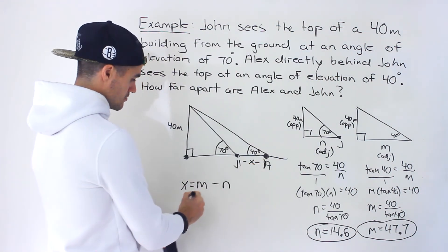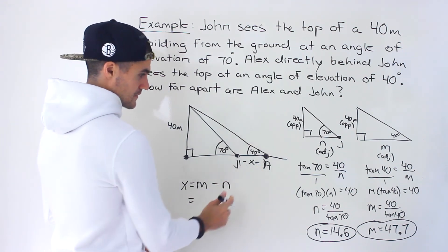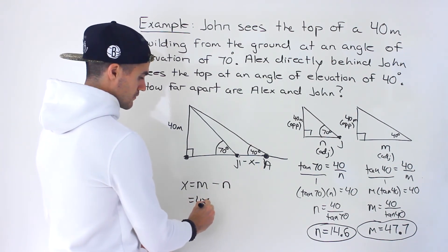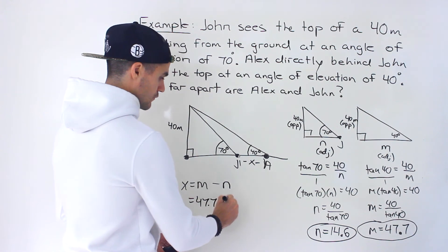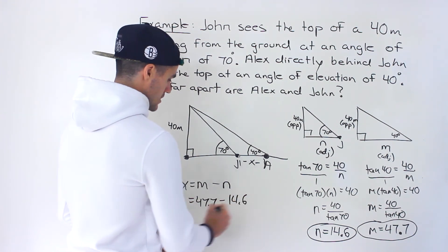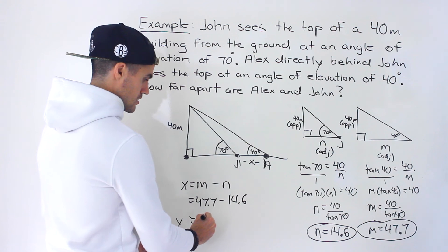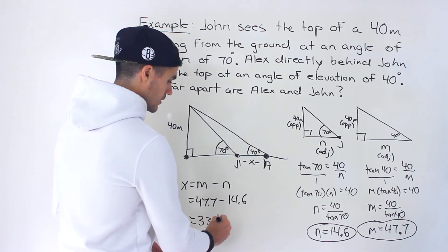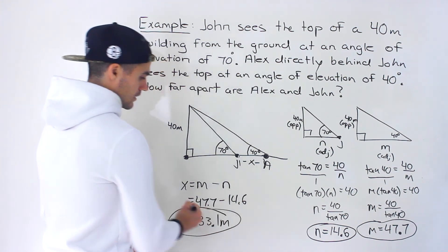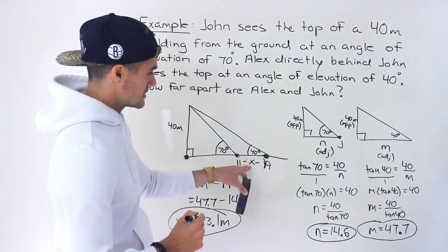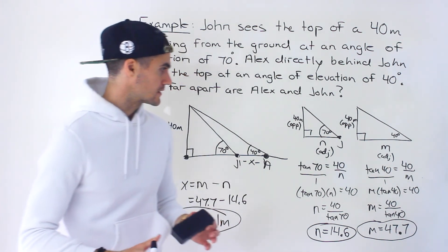So then taking those values, putting it in here to find this X value, it would be 47.7 meters minus 14.6 meters. And that would give us 33.1 meters like that. So that ends up being the distance between John and Alex.